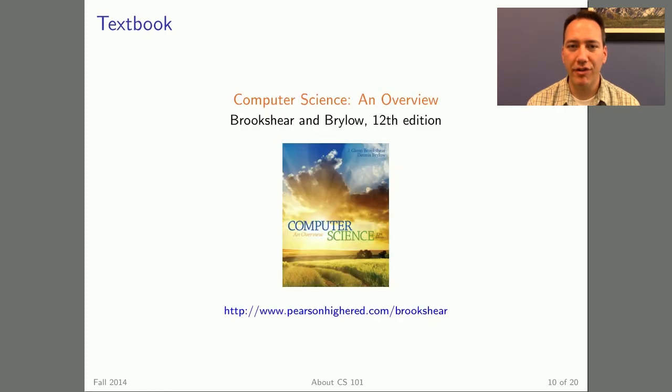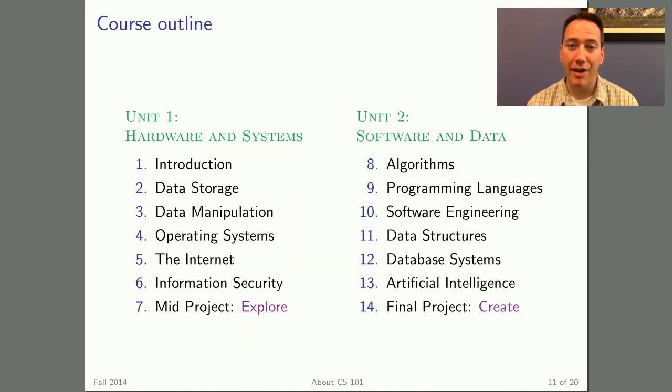We'll be using a textbook by Brookshire and Brylow called Computer Science an Overview. It's currently in its 12th edition, and you can click on the link on this slide to get more information about the book. The course is organized into two main units. The first half of the semester, we'll take a look at the hardware and system sides of computer science. We'll talk about how the internet is organized and how computers work under the hood, different security issues that arise at each level. And you'll also have the opportunity at the end of this unit to complete your own exploration project where you can write and do an oral presentation about a computing innovation of your choice.